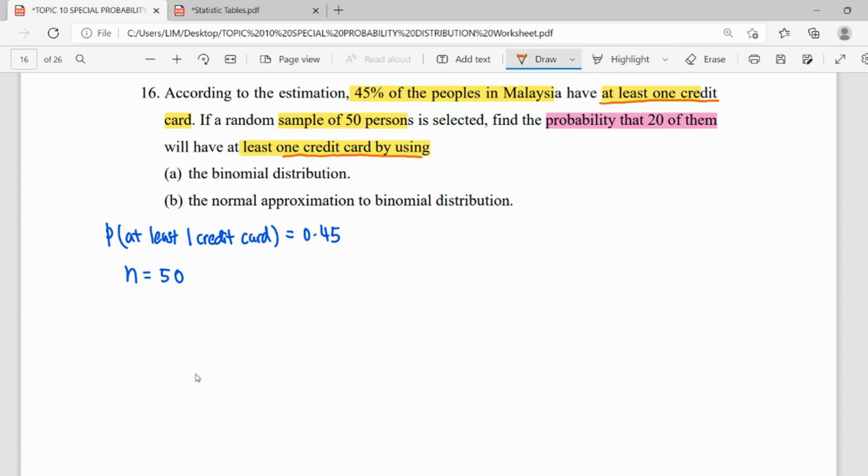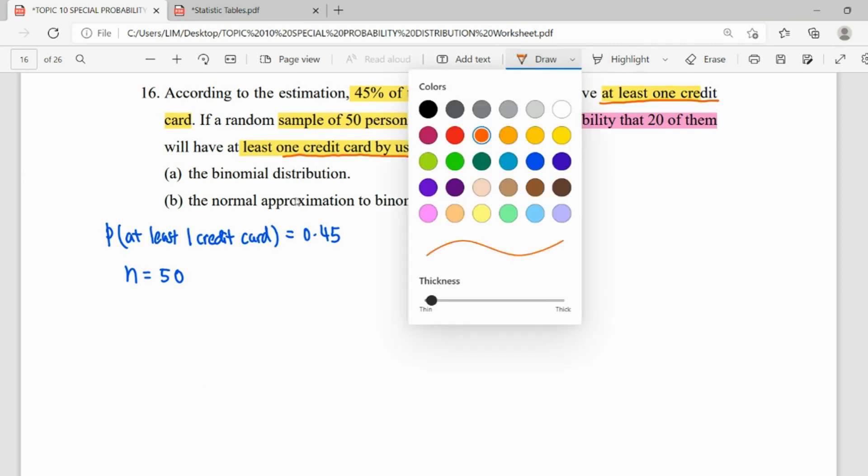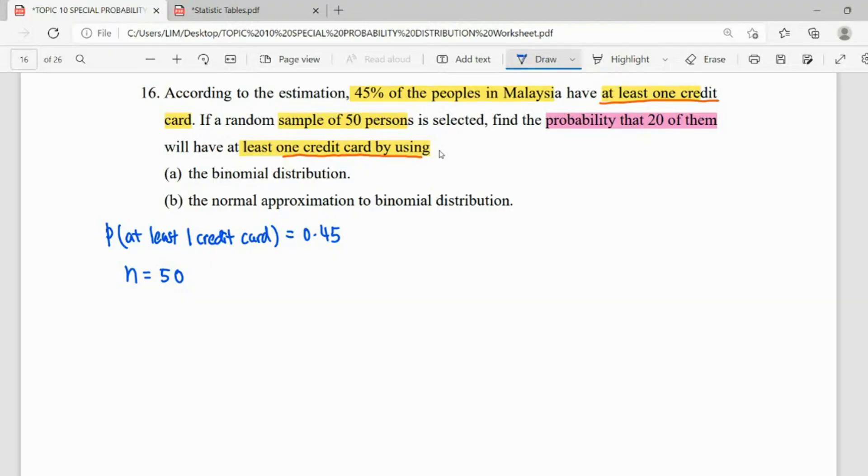Using two methods: one is using binomial, one is using normal approximation. So we have two methods to do it here. First of all, we define our distribution. What is our X? X is the number of persons having at least one credit card. So here, X is distributed binomial with n=50 and p=0.45.